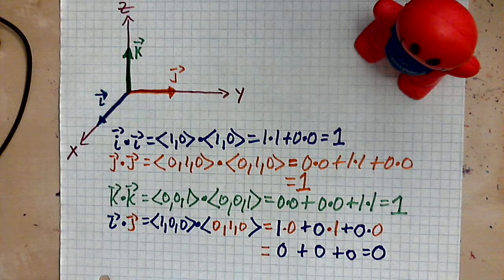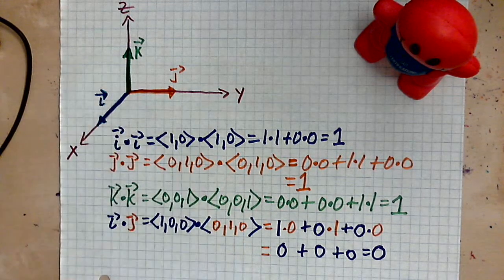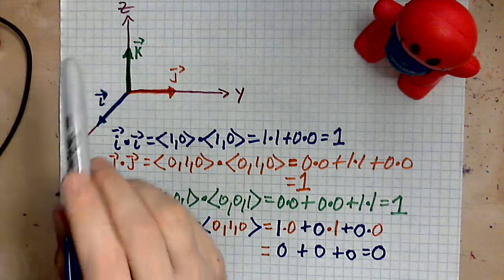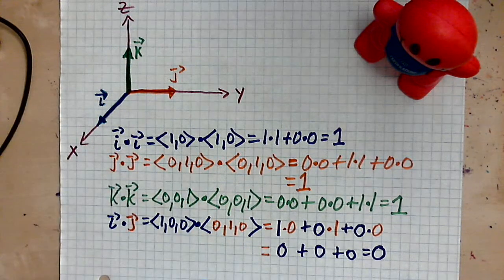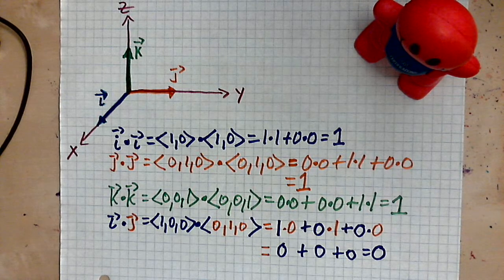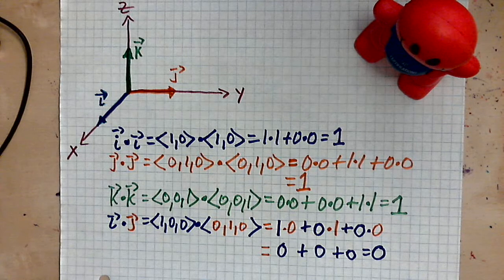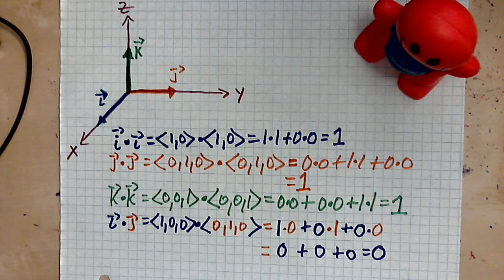J dotted with I is also 0. J dotted with K is 0. I dotted with K is 0. So that's the case.